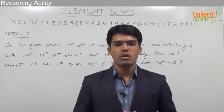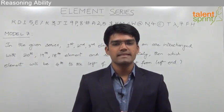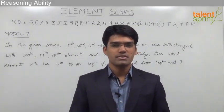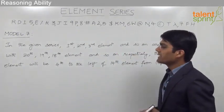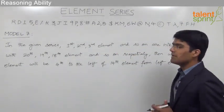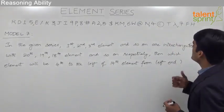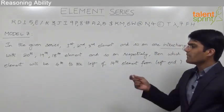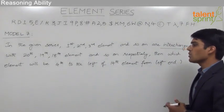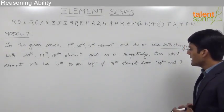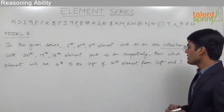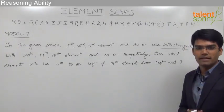Let us now discuss the 7th model from the element series, which is again based on the 4th model with a given condition. The question is: in the given series, the 1st, 2nd, 3rd element and so on are interchanged with the 20th, 19th, 18th element and so on respectively. Then which element will be 4th to the left of the 14th element from the left end?